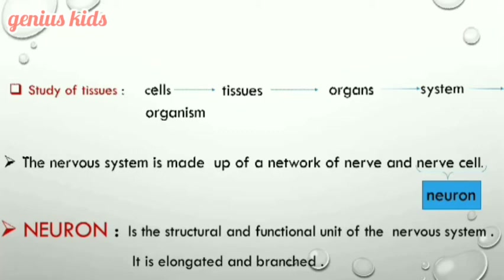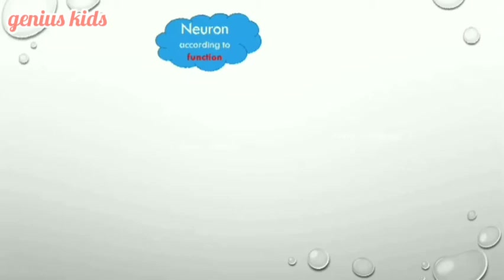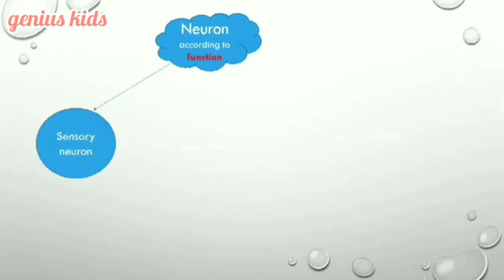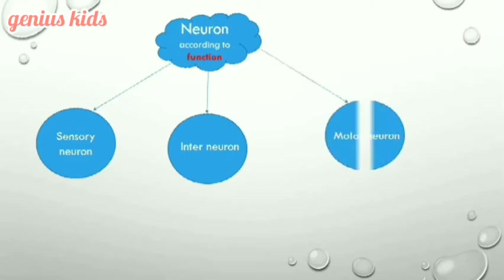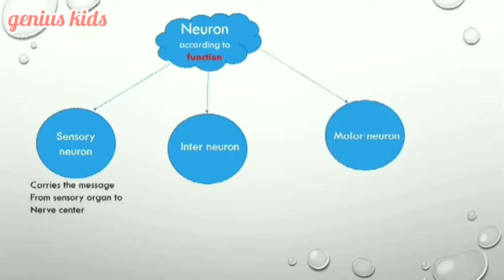The neuron has an elongated shape and it is branched. Neurons are classified according to function and structure. First, according to function, a neuron can play the role of sensory, interneuron, and motor neuron. The sensory neuron carries the message from sensory organs to the nerve center.